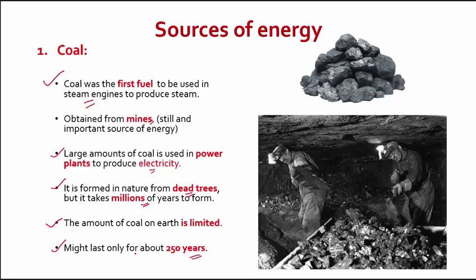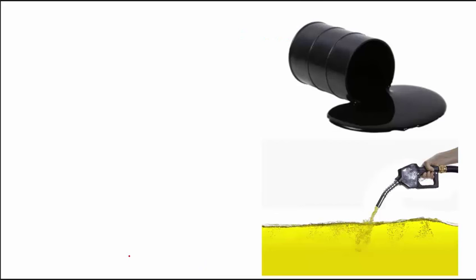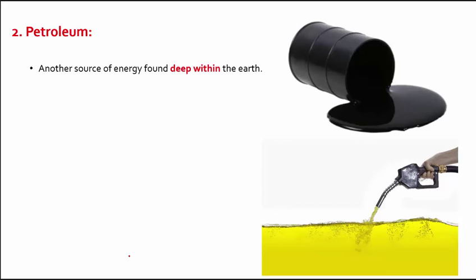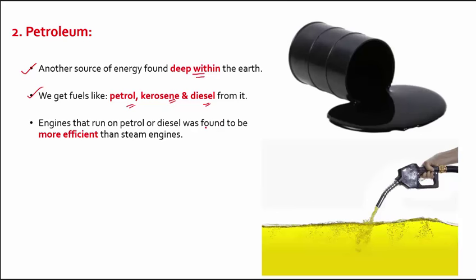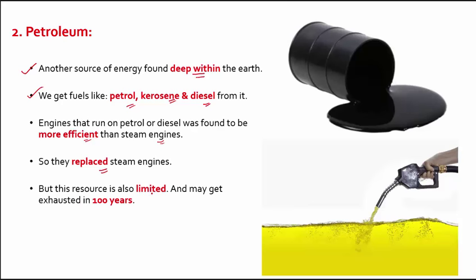As man developed further, another source of energy was discovered — petroleum. Petroleum is found deep within the Earth, and we get fuels like petrol, kerosene, and diesel from it. It is also called crude oil and is black in color. Engines running on these fuels were found to be more efficient than steam engines, so people started replacing steam with these fuels. However, petroleum is also a limited resource and may be exhausted in another 100 years.